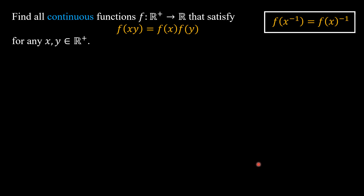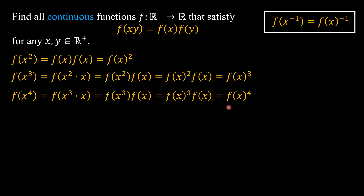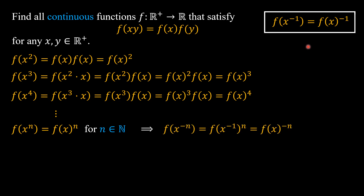Now we are going to see the pattern of f(xⁿ) for any natural number n. By the functional equation, f(x²) = f(x)², f(x³) = f(x)³, f(x⁴) = f(x)⁴, and so forth — we have f(xⁿ) = f(x)ⁿ. This is true for any natural number n, and using the reciprocal result, this also holds for non-positive integers, so f(xⁿ) = f(x)ⁿ for any integer n.